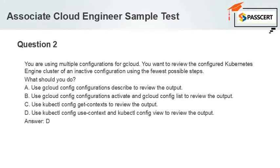A. Use GCloud Config configurations describe to review the output. B. Use GCloud Config configurations activate and GCloud Config list to review the output. C. Use kubectl config get-contexts to review the output. D. Use kubectl config use-context and kubectl config view to review the output. Answer: D.